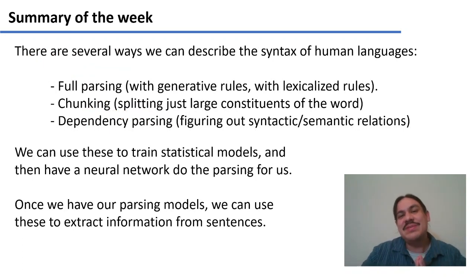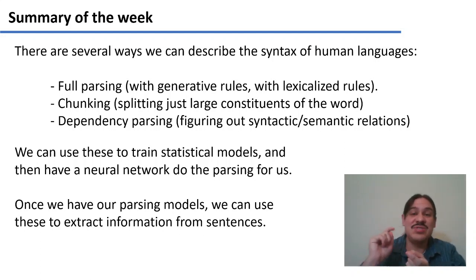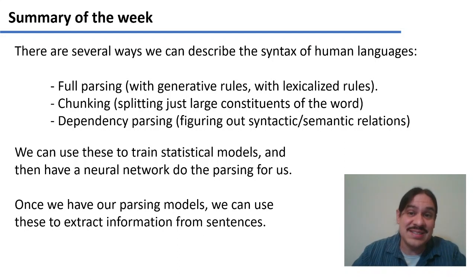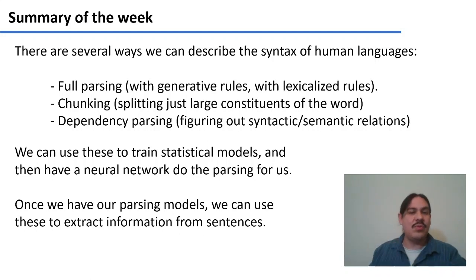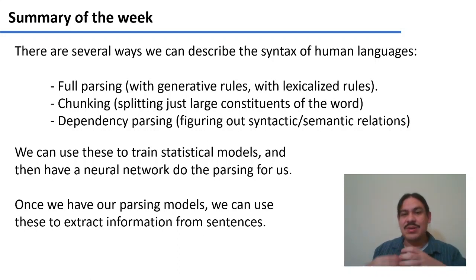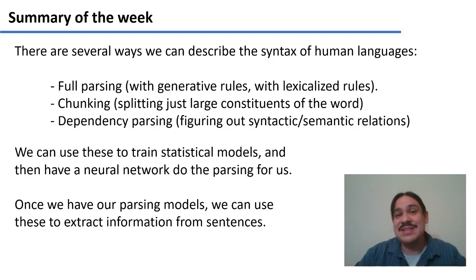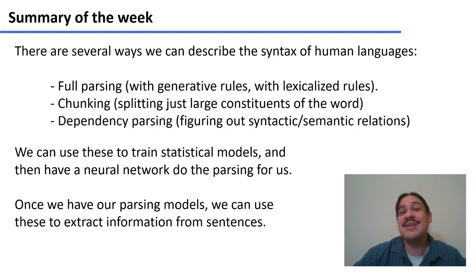As a macro summary of the week, we've described several ways to parse human languages: full constituency parsings with rules like generative grammar, where a sentence is a noun phrase and a verb phrase and you can generate an infinite number of sentences; chunking, which splits a sentence into large components; and dependency parsing, where you figure out subjects and direct objects of verbs. Creating these is expensive and difficult. Eventually we can create databases called treebanks and use them to train statistical and deep learning models for parsing. Once we have these tools, we can begin extracting information and ultimately knowledge from sentences — which will be the topic of next week.